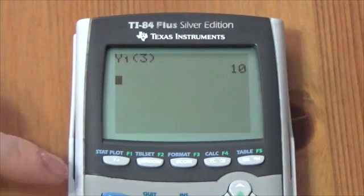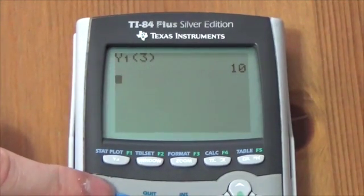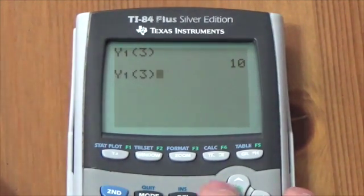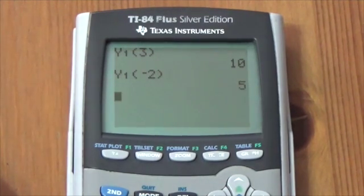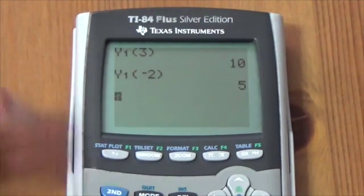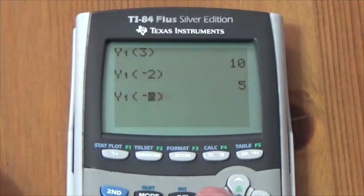Now I can use this for a lot of different things. If I now use the second enter, I can go back into there and make this, let's say, negative 2. I can evaluate this function very quickly for a whole variety of different values.